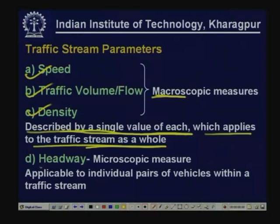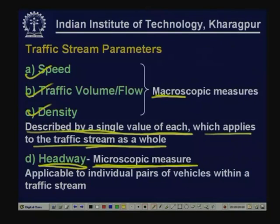There is another parameter often used: headway. Headway is called a microscopic measure because it applies to individual pairs of vehicles within the traffic stream — not a single value for the whole stream but rather between two vehicles. Speed, flow, and density are macroscopic measures; headway and the speed between two vehicles are microscopic measures.